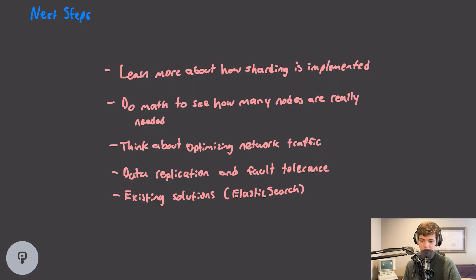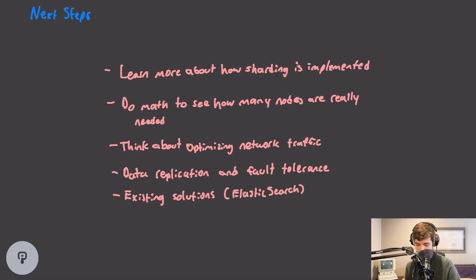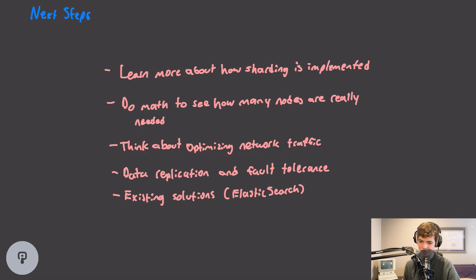Now that we've seen a basic overview, let's look at some next steps. One really important topic to explore is sharding and how it's implemented in databases, since it was critical to our solution. In a real-world system you'd also want to do the math on how many nodes you need, factoring in storage space, write volume, write frequency, and read frequency for both hot and cold storage. There are also problems around optimizing network traffic when moving such large quantities of data within the cluster.